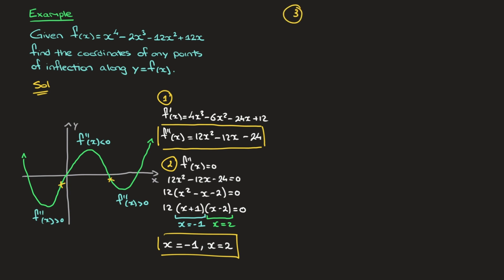In step three, we need to study the sign of the second derivative on either side of these values of x, and I'll do that with a sign table. To construct that sign table, we're going to use the fully factored form of our function's second derivative: f double prime of x equals 12 times x plus 1 times x minus 2.